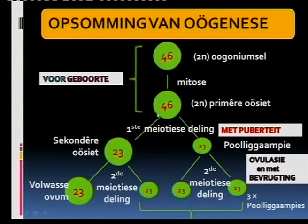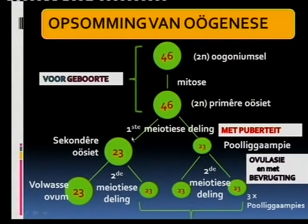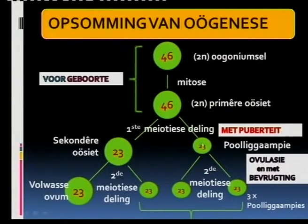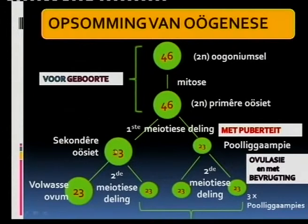In Afrikaans again: the first meiotic division happens once a month — one primary oocyte divides further. This is why a woman over her lifetime, up to menopause, will produce approximately 400 to 500 eggs, depending on the length of that period. The secondary oocyte has already begun developing into one polar body.